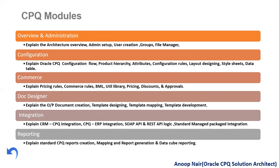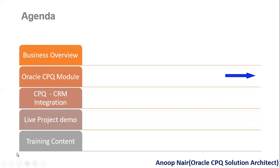So configuration, commerce, and document manager — these three parts cover the CPQ, that's Configure, Price, and Quote. Apart from that, I will be covering the main integration aspects: CRM-to-CPQ integrations, CPQ-to-ERP level integrations, and standard package integrations. Last, I will be covering the reporting module — how reporting can be generated using the standard reporting module in Oracle CPQ and the data-keep reports. That's the training content we're going to cover.